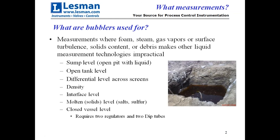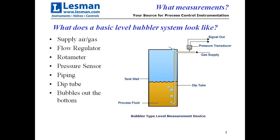For those of you who might not have been involved in this for very long, let's go over what bubblers are basically used for. A bubbler takes a measurement where other things interfere with other technologies — like foam, steam, water that condenses on the horn of a radar antenna or on the diaphragm of an ultrasonic transducer, when you've got a lot of surface turbulence that can't be averaged out, or where there's solid content or debris that makes other measurement technologies impractical.